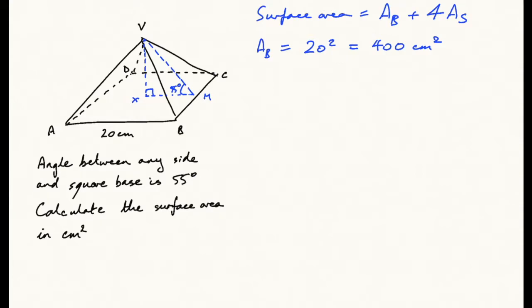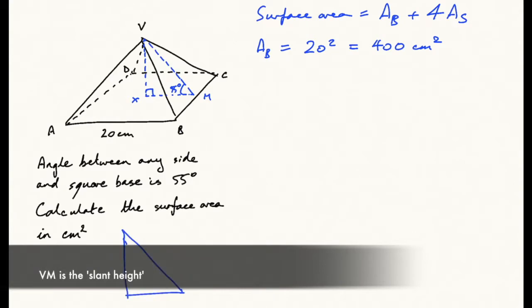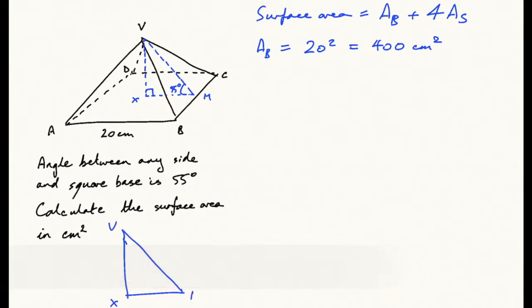Next, we've got to work out the other side. What we need to do here is find VM. So this is triangle VXM. We know this is 55 degrees, it's a right angle triangle, so XM is 10 centimeters—it's half the side length.